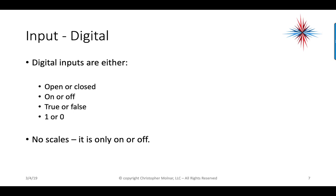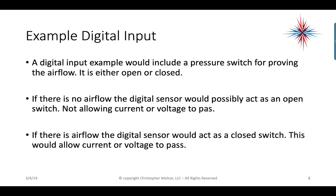The digital input is a little bit different. It's either open or closed, on or off, true or false, or in machine language, 1 or 0. It can only have two values. An example of a digital input would be a pressure switch for proving airflow — it is either open or closed. We either have airflow or we don't. If there's no airflow, the digital sensor would act as an open switch, not allowing current or voltage to pass. If there is airflow, the digital sensor would act as a closed switch, allowing current or voltage to pass.